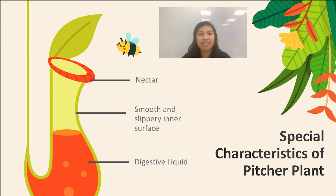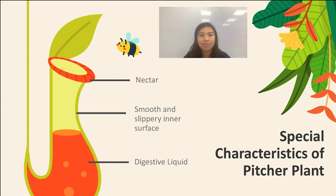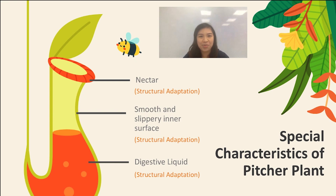The first adaptation is nectar, which is found at the edge of the pitcher. Number two, it has a smooth and slippery inner surface. Number three, the pitcher leaf has digestive liquid that can be found at the bottom of the pitcher. Are you able to identify if these three adaptations are structural or behavioural? Remember, structural adaptation refers to what the organism has. If you categorise all three adaptations under structural adaptations, you are right! Knowing whether it is structural or behavioural isn't enough — we also need to find out why these structural adaptations exist.